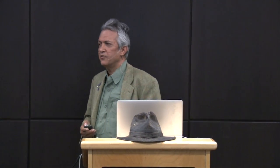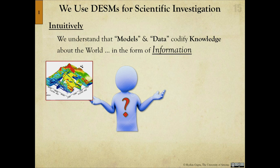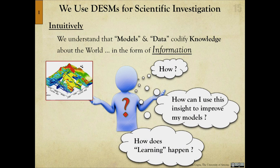People have the intuition that models and data codify knowledge about the world in the form of information. But when you say 'my model contains information,' what do you really mean? How can I use this insight to improve my models? Given that models and data seemingly codify information in different ways — one is a string of numbers, the other is a bunch of equations — what's the relationship between them? How does learning happen? How do I take new information in the data and absorb it into my model to improve it?